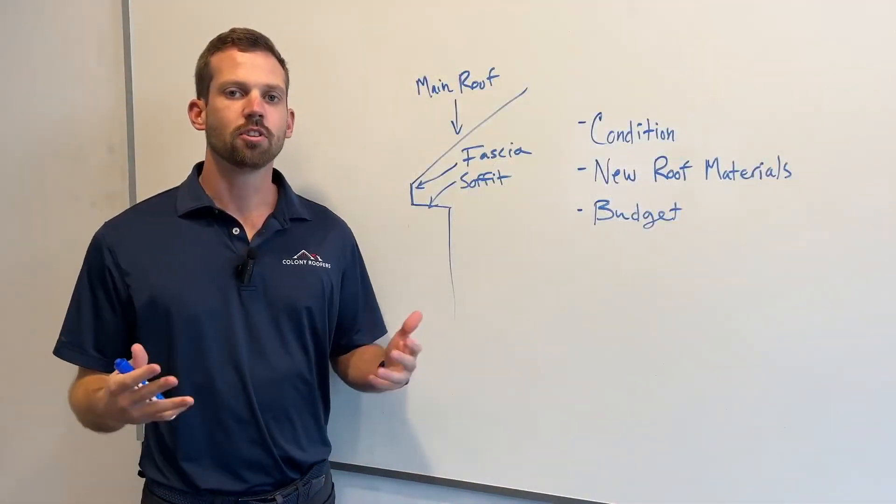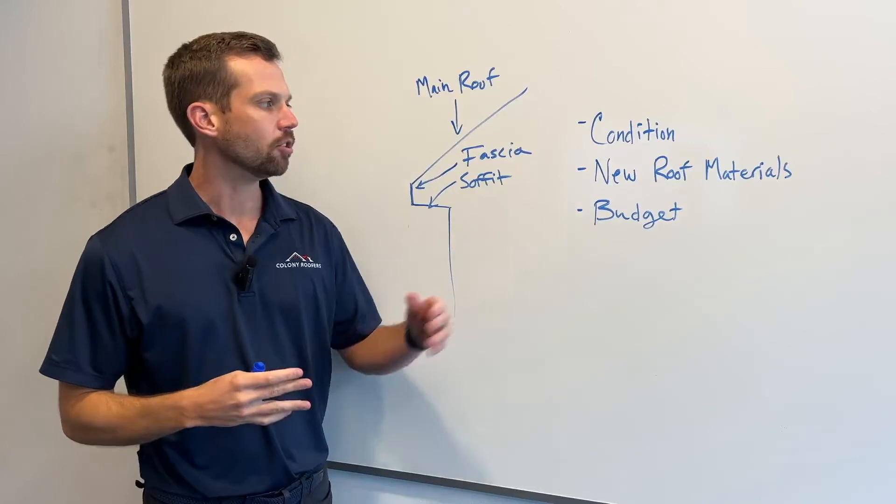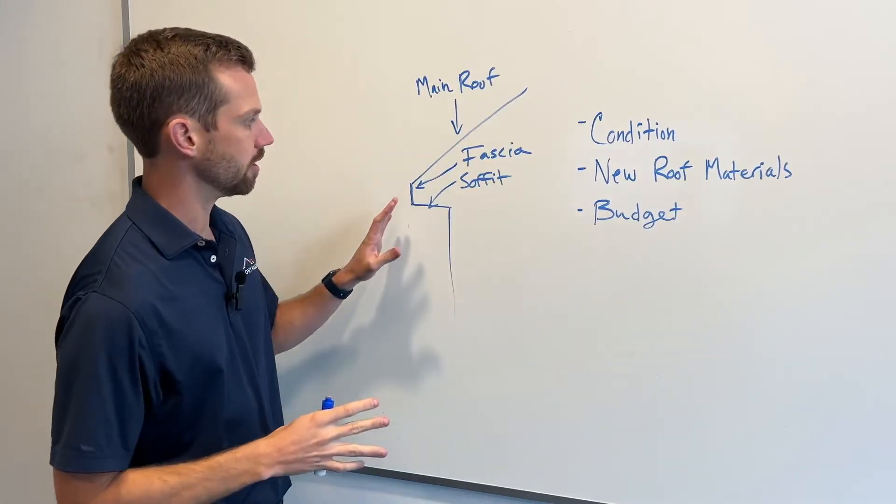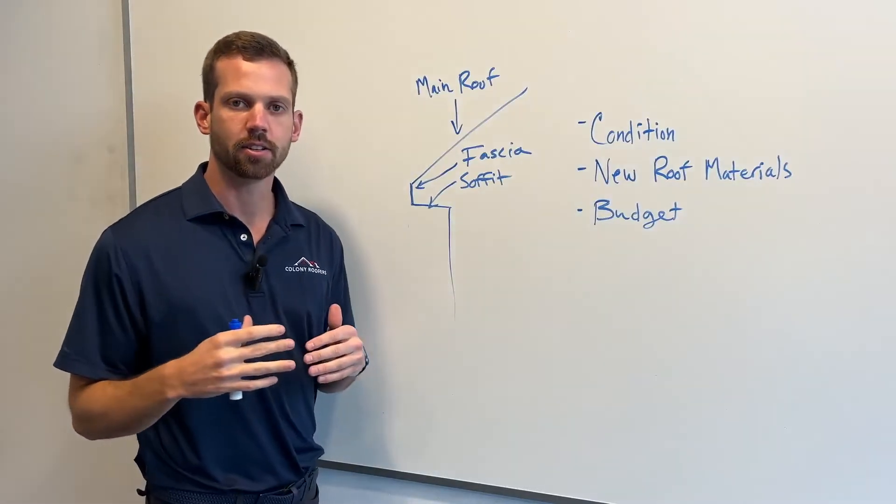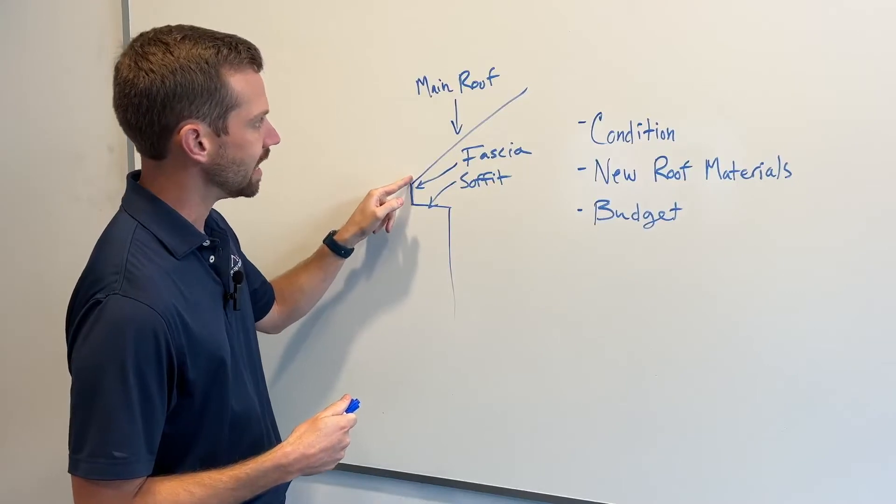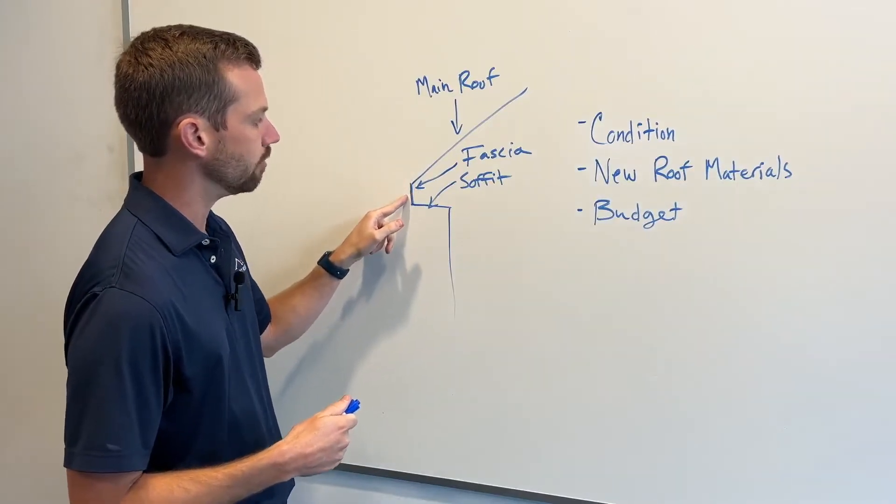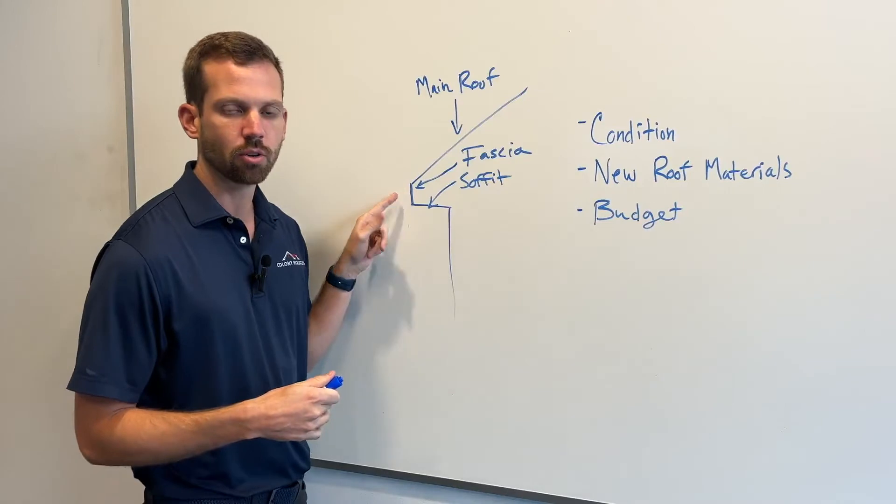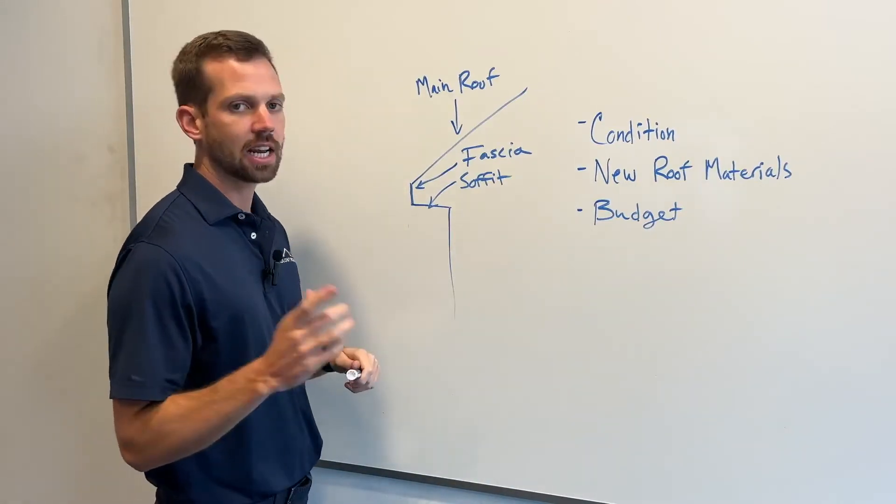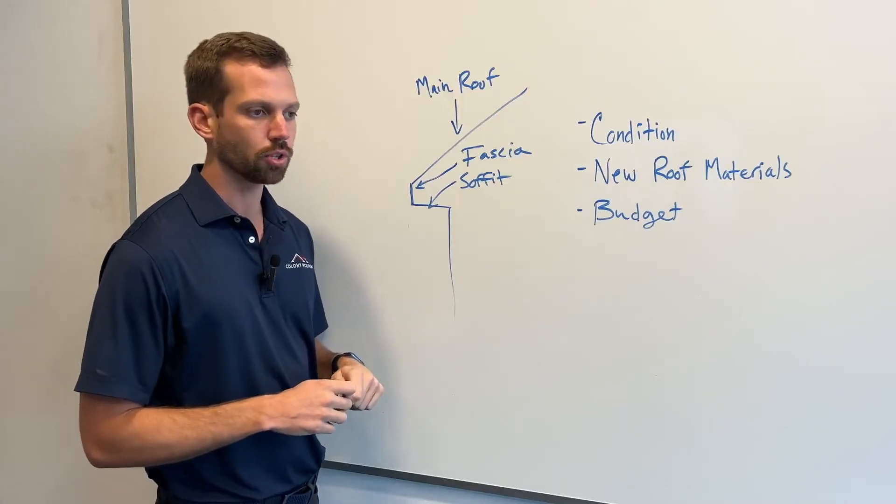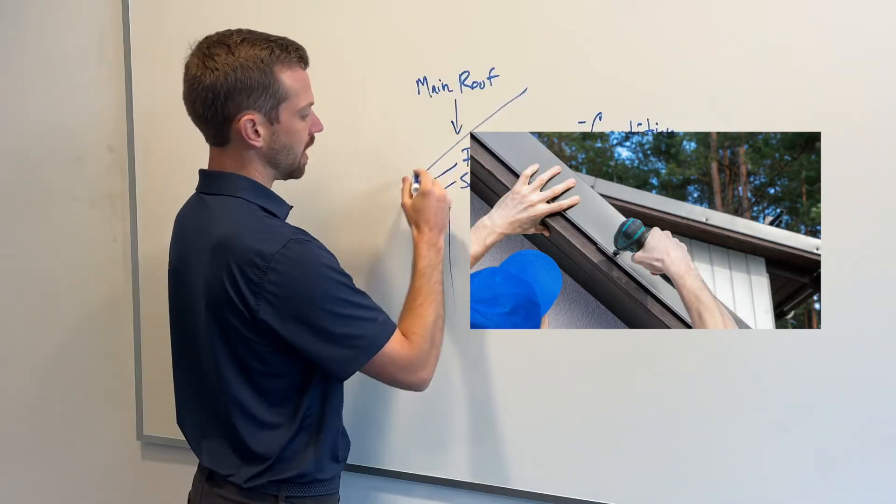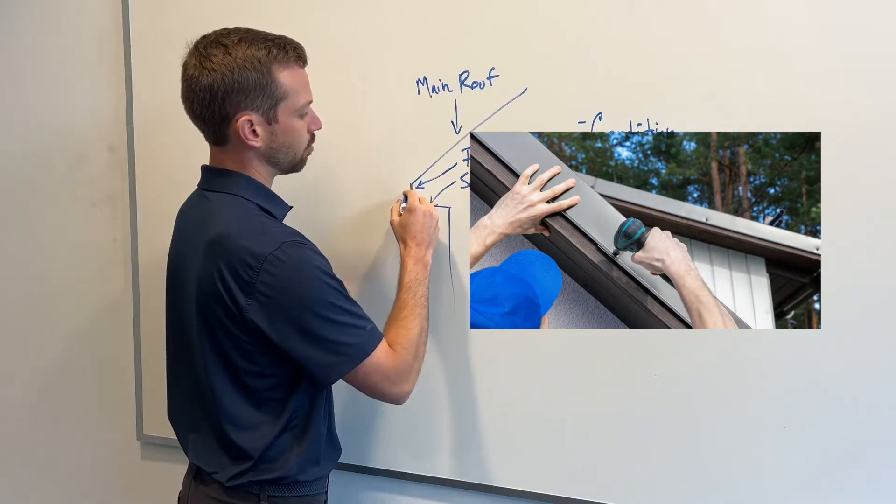All right. So once you've looked at the existing condition of your gutters, let's talk about new roof materials. And this little diagram right here kind of shows us the different components of where a roof and gutters intersect. The material that we use at the edge of the transition from the main roof to the fascia board is going to determine whether or not you may want to do this at the same time.